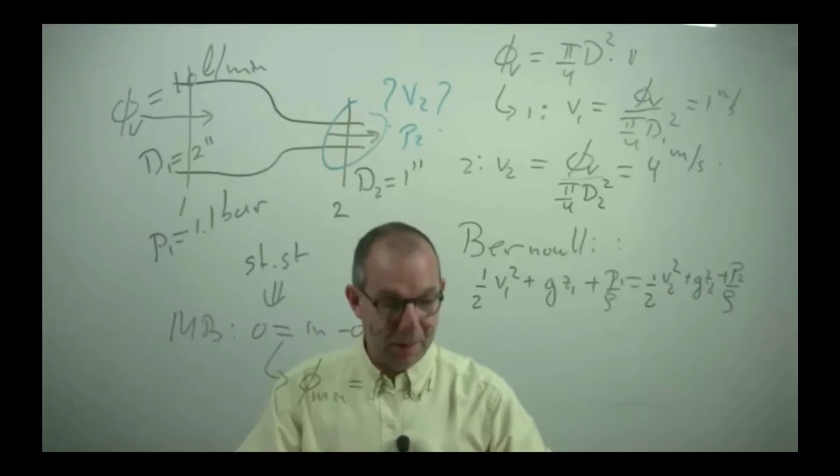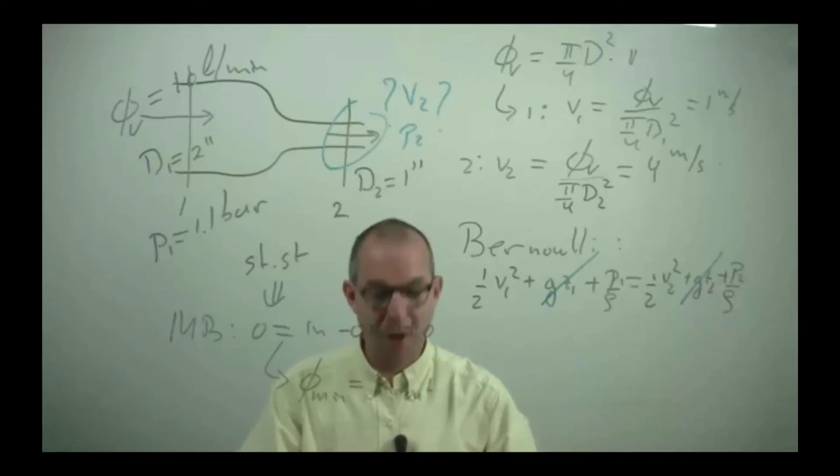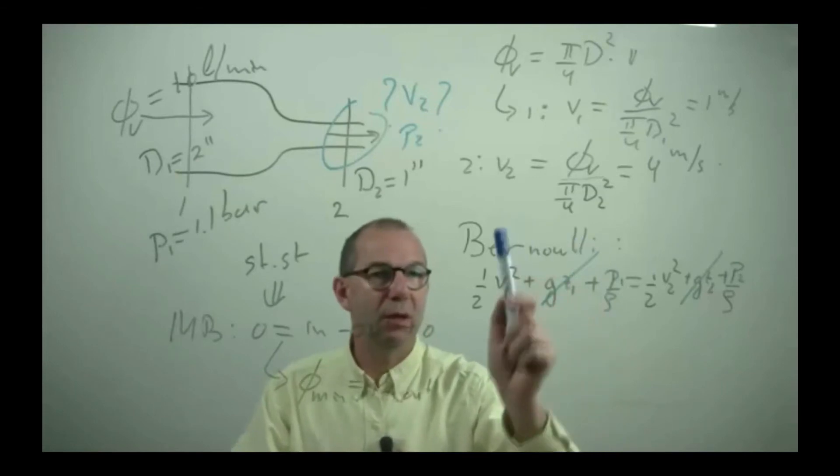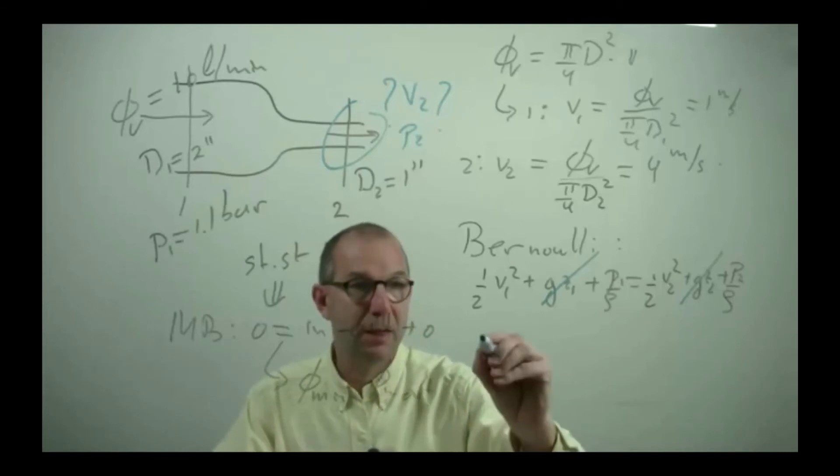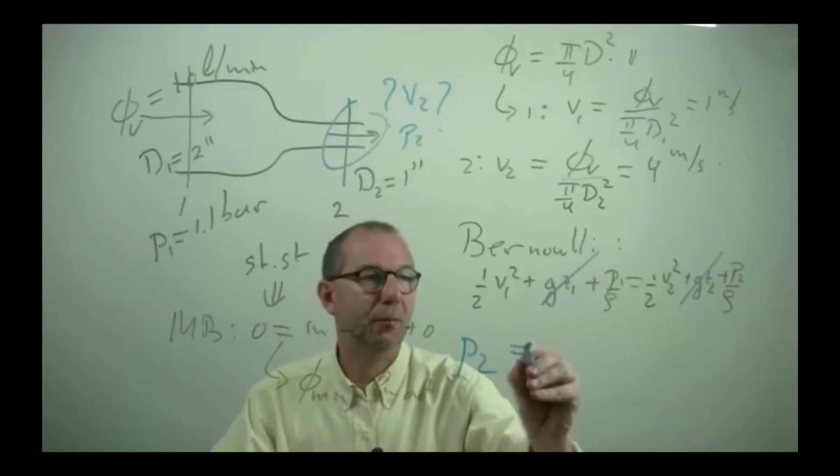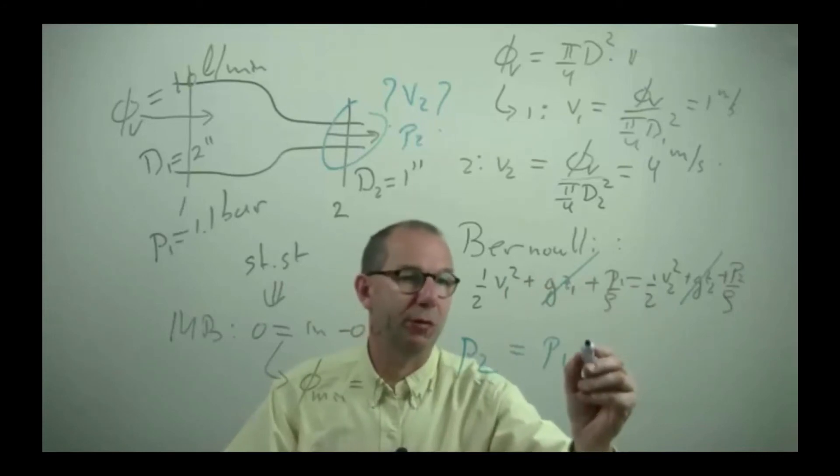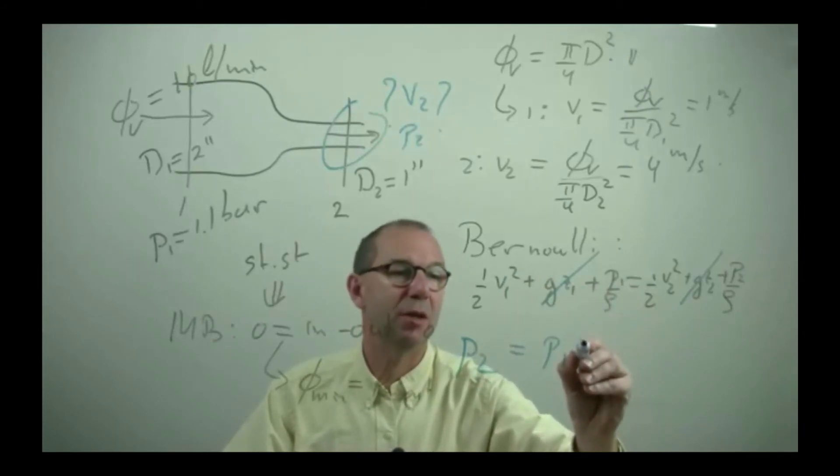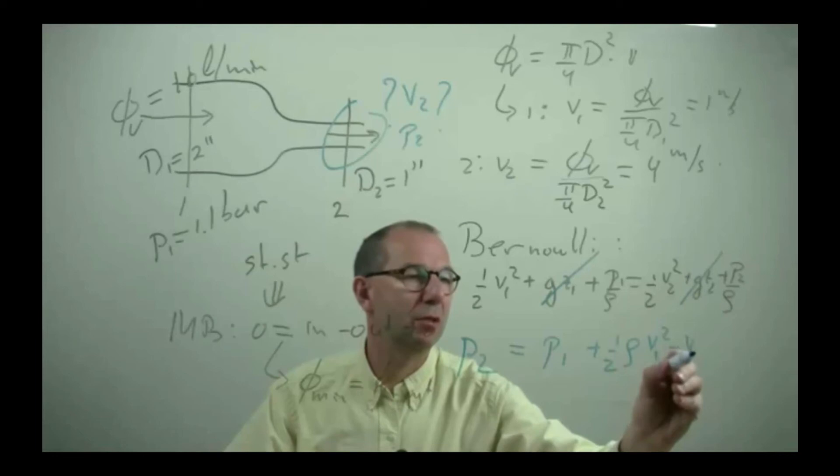Let's scratch out a bit. These can go out because it's at the same height, there's no change, Z1 and Z2 if you want. I do know P1, V1, I computed also V2 so I can back out P2. P2 the pressure downstream is the pressure upstream and then I need to correct for velocity effect. In essence kinetic energy effect. So it is going to be plus half rho V1 squared minus V2 squared.